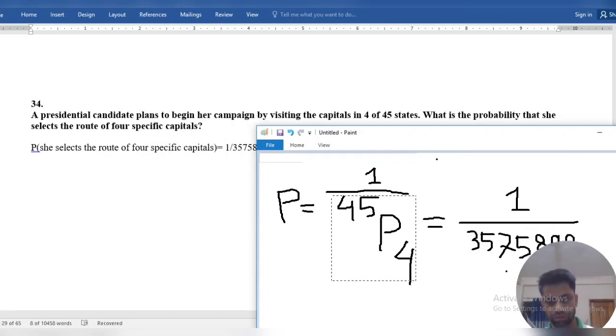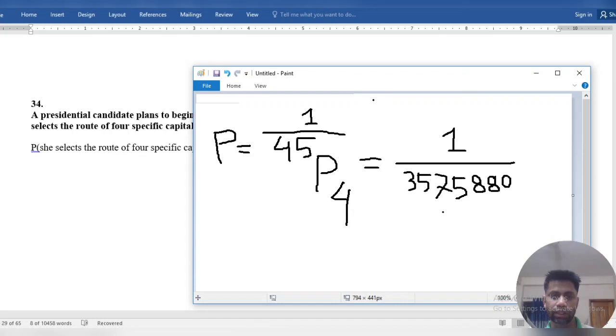We can find 45P4. 45P4 is 3,575,880. This is very simple. The probability is one over 45 permutation 4.